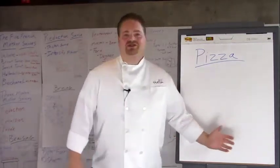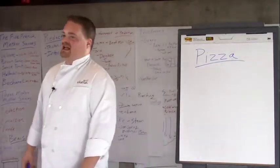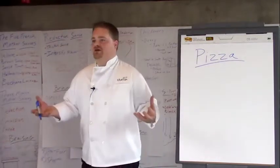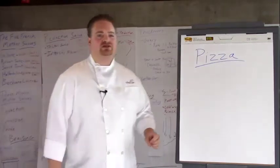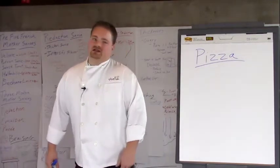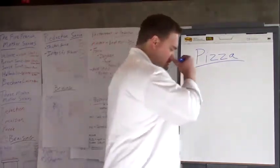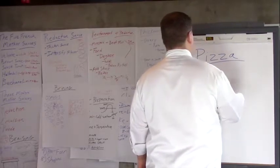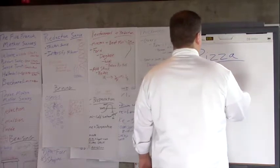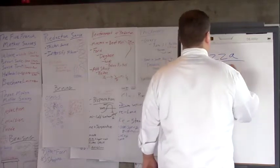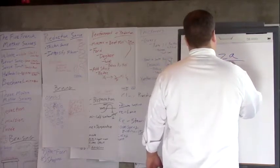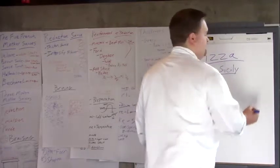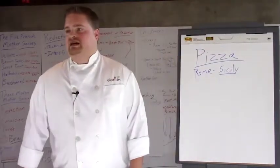There's an evolution of pizza, and it came from Italy. You have basically two major styles that derive from Italy. The earliest style is in the region of Rome, where it was popularized — but the region of Sicily — which was basically what we know today as focaccia.